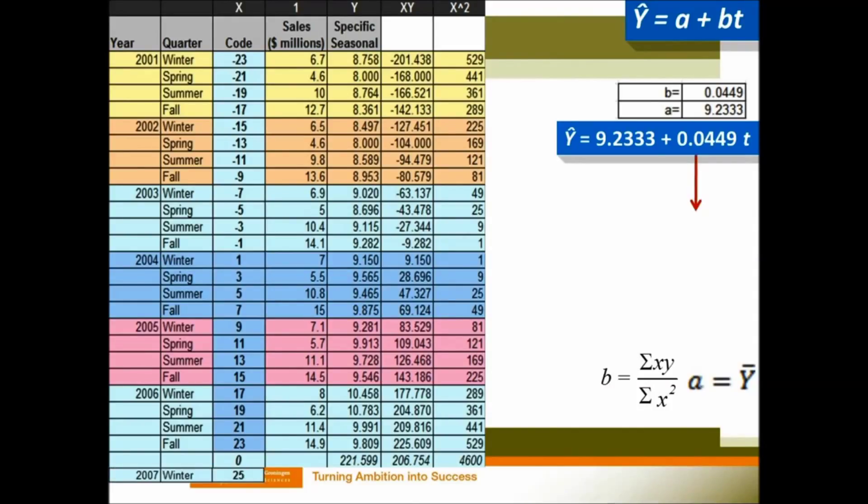We are going to predict the winter sales in 2007. And if we extend our coding for winter, which is right after fall in 2006, the code should be 25. So your t will be 25, and then you can predict the 10.36 million dollars for 2007.